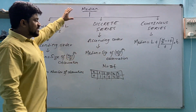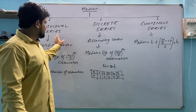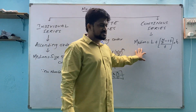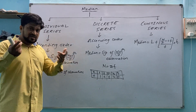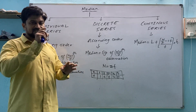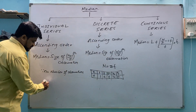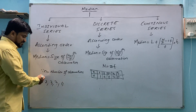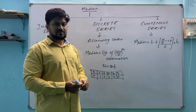In median, there are three types of questions: individual series, discrete series, and continuous series. By seeing the question format you must determine which type it is — the question will not tell you directly. For example, if the question gives values like 2, 3, 7, 1, 4, we need to find the median by first arranging them in ascending order.